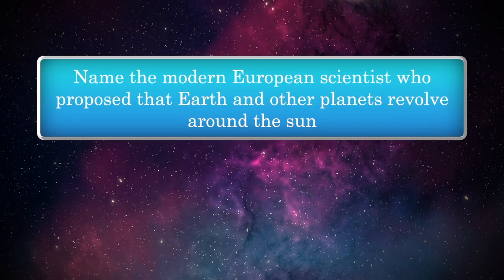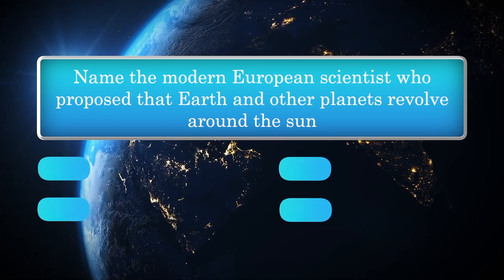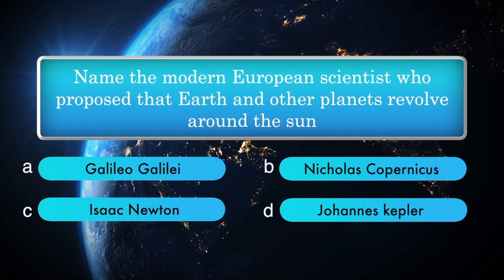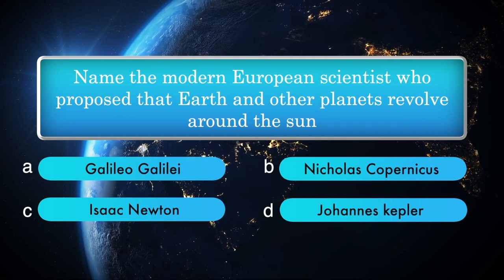Name the modern European scientist who proposed that Earth and other planets revolve around the Sun. Options: Galileo Galilei, Nicholas Copernicus, Isaac Newton, Johannes Kepler.